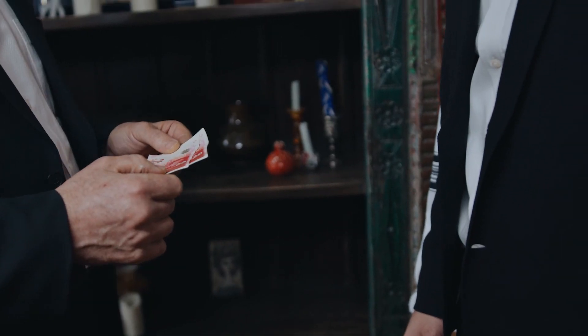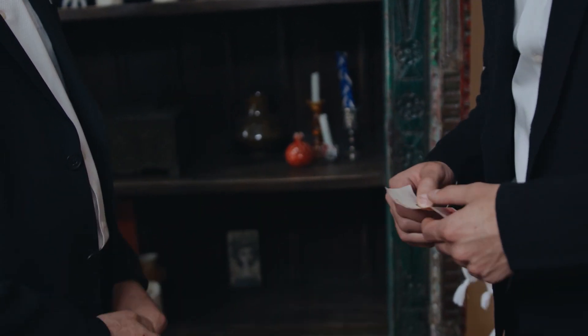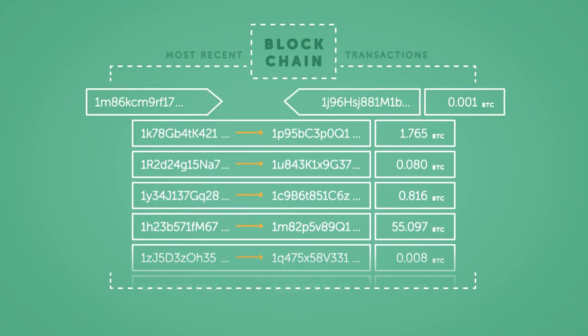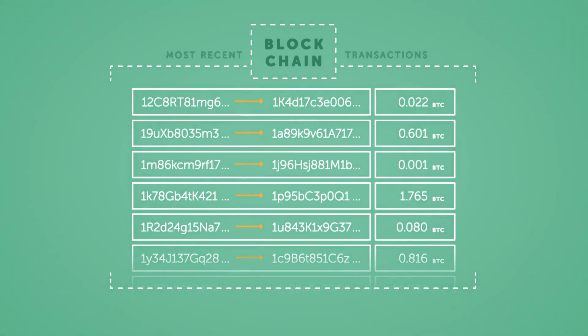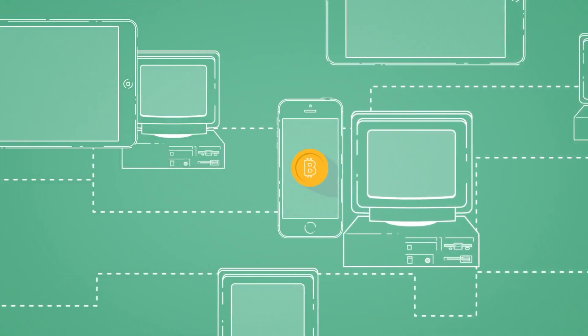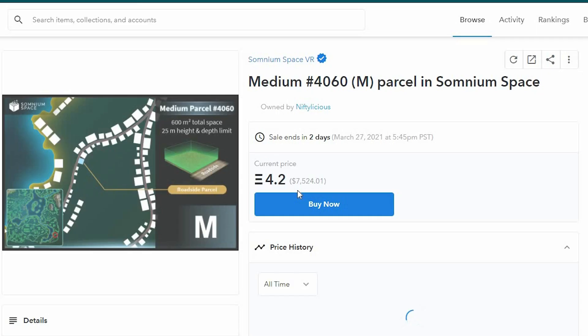When someone buys your token, you can forward the token to the buyer directly. The Ethereum blockchain will confirm it and the token will be sent to the buyer's address and saved in their wallet. When you sell a token, you need a list price, the name of the token, and the link address of the token. You can make as many tokens as you want on the OpenSea platform and sell them at the price that you want.